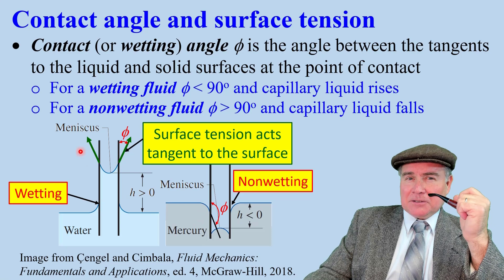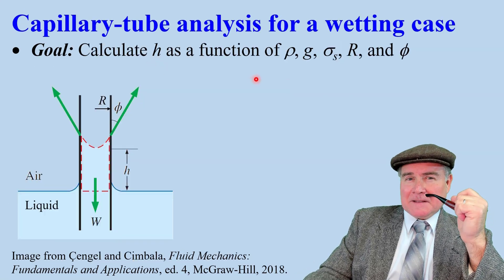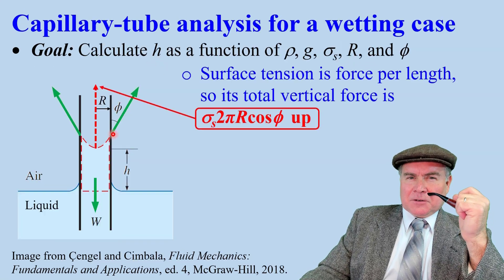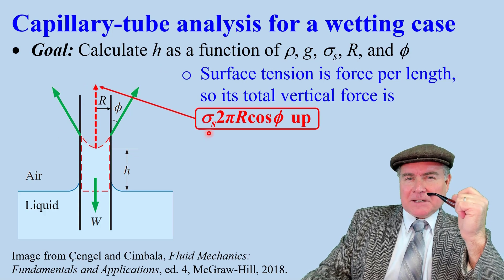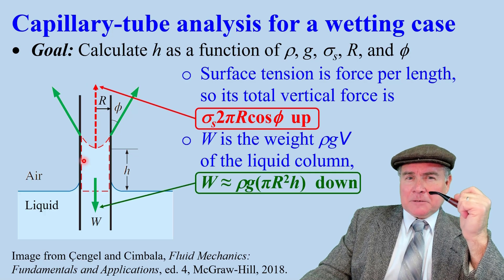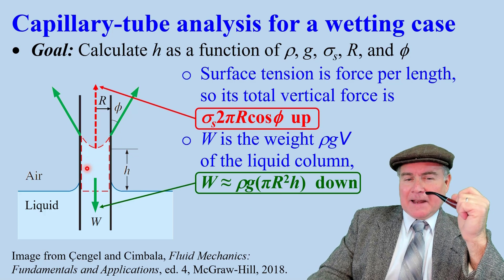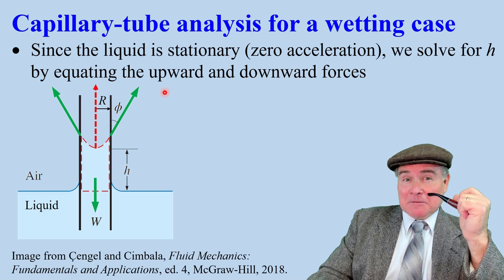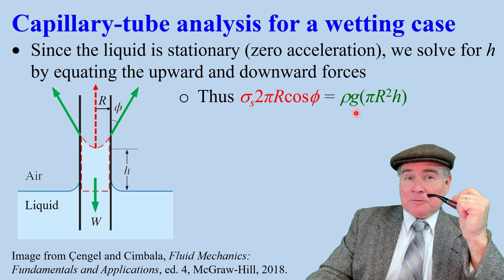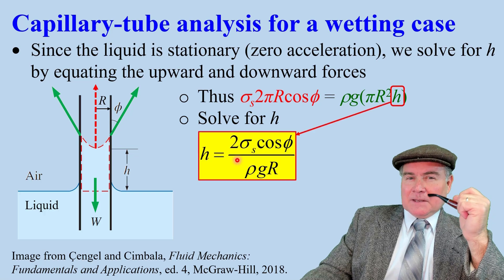Surface tension always acts tangent to the surface. Now we calculate the height as a function of the other variables. Surface tension acts circumferentially, so the total surface tension upward is sigma_s times the circumference times cosine phi. W is the weight of the fluid; if we ignore the meniscus, W equals rho g times the volume of the liquid inside. Since the liquid is stationary, Newton's law tells us we can sum the forces and set them to zero. Upward force must equal downward force. Now we solve for H.